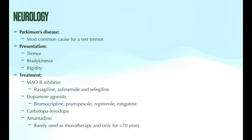Treatment of mild Parkinson's consists of monoamine oxidase type B inhibitors and dopamine agonists. Examples of MAO-B inhibitors include rasagiline, safinamide, and selegiline. It's really important to build familiarity with these medications so you're able to build a bigger picture when looking at a patient and their medication list. Dopamine agonists include bromocriptine, pramipexole, and ropinirole. These are very difficult drug names, so make sure to read through them.